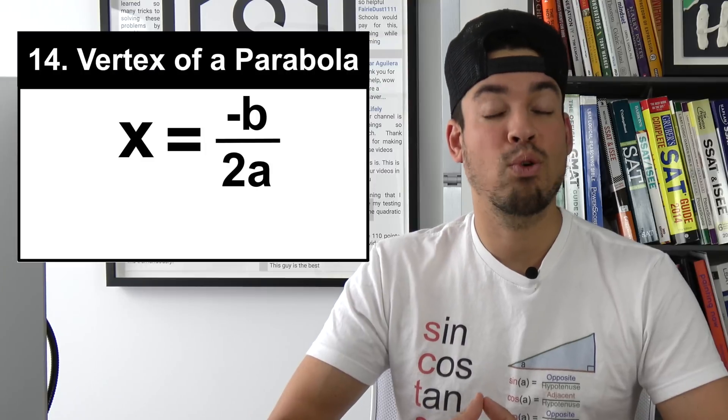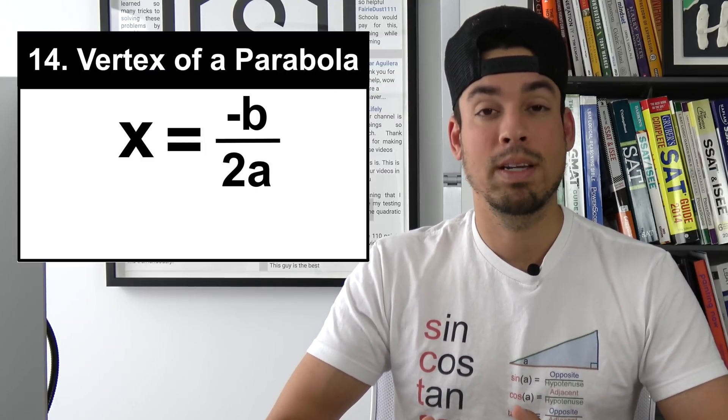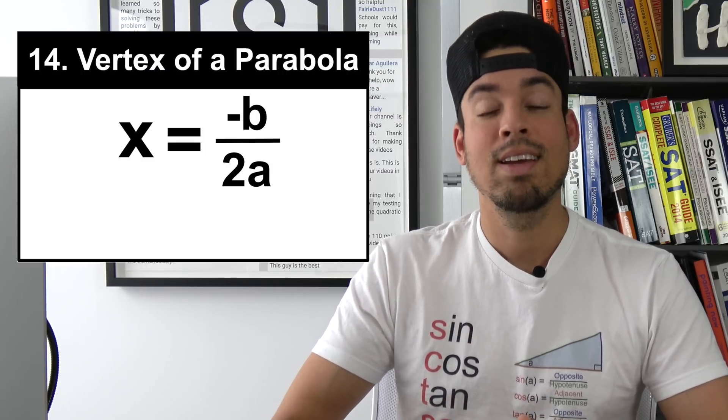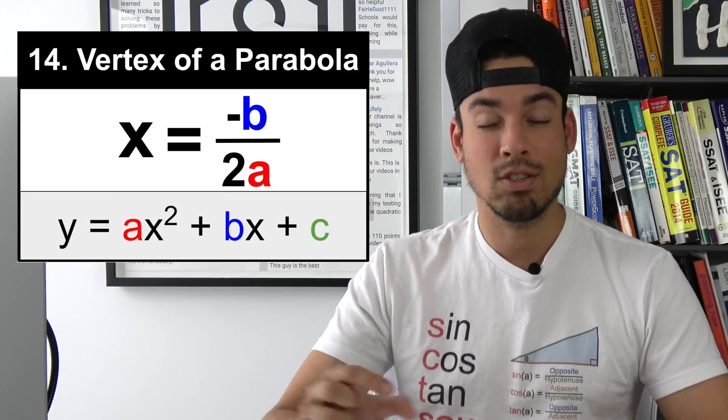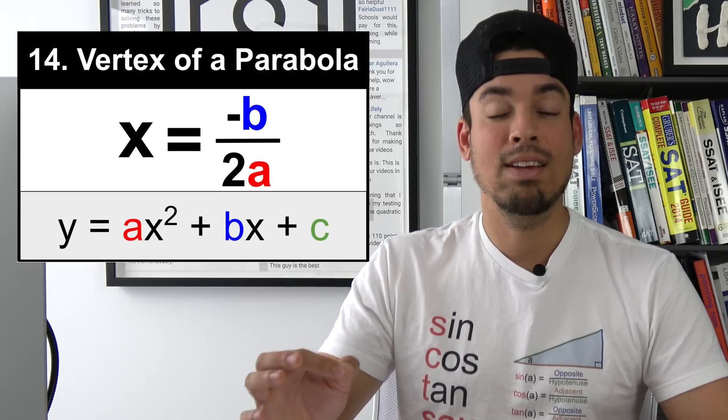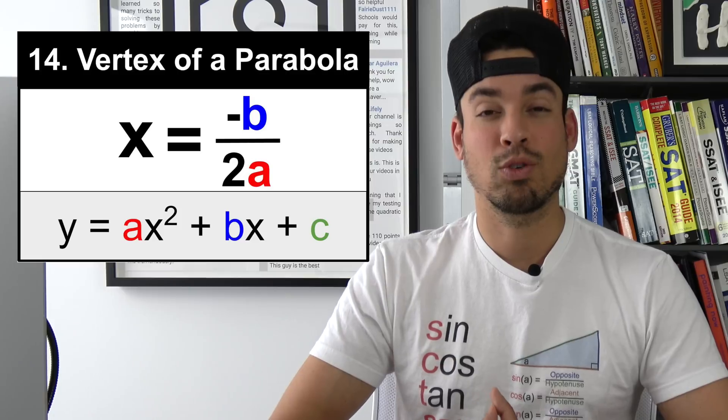Next we have a quick and easy formula to help you find the vertex of a parabola and this is especially important if you're ever given a quadratic function and you're trying to find either the max or min value. You can quickly plug this in and negative b, so b stands for the coefficient of the second term in the quadratic and that a value is from the coefficient of the first term in the quadratic.